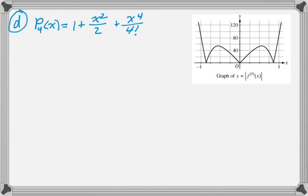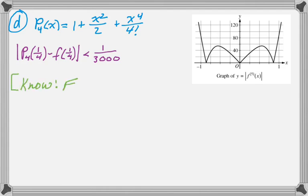And the final part is about error. It's the Lagrange error bound, which people are not really fond of, but it's really not that difficult. So we're given a graph of the absolute value of the 5th derivative. That should be a huge hint that we're going to be looking at the 5th derivative for finding the error. So we're trying to show that the 4th degree polynomial here, evaluated at 1/4, approximates the function evaluated at 1/4 with an error of less than 1 over 3,000.